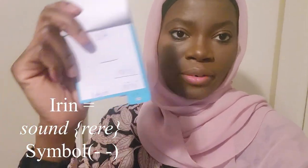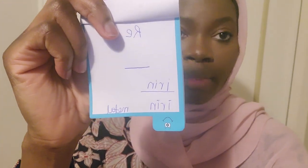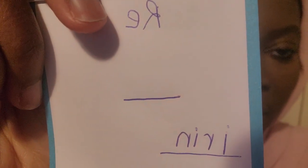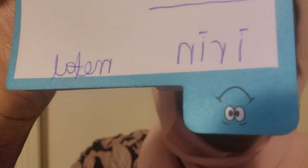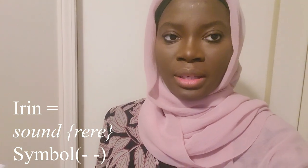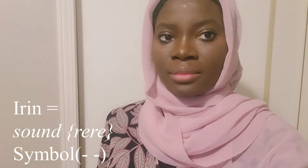So I have 'irin' here — irin means metal in English. The first 'irin' I wrote has none of the dash symbol on the 'i' vowel sound, but the second one — if you want to be technical — you can put the dash to signify the Re tone. So irin with Re-Re sounds — that's the Re sound demonstrated.